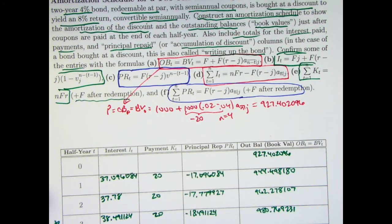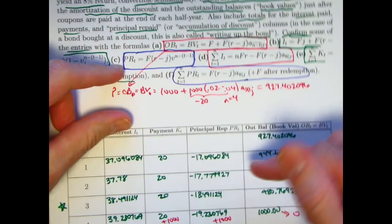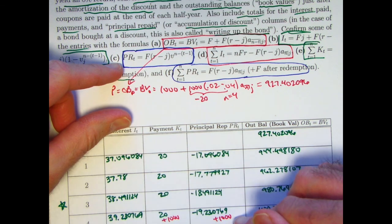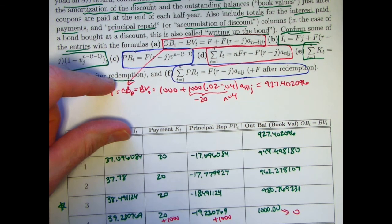So all these formulas were discussed in videos 107 and 108. Now I've reconfirmed them in this context. You have to be a little careful now because R was less than J. So R minus J was negative. But when you think of these PR amounts as negative, all these formulas still work in the same way as before.